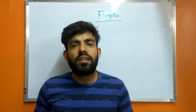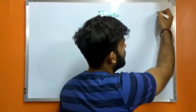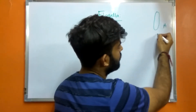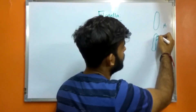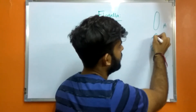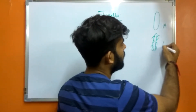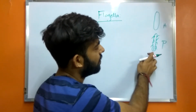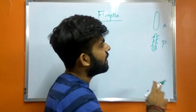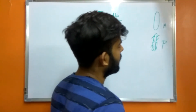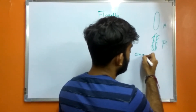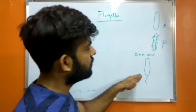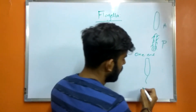Regarding flagella arrangements: if a bacterium has no flagella, it is known as atricous. If it has flagella over its entire surface, it is known as peritricous. If only one flagellum is present at one polar end, it is known as monotricous.